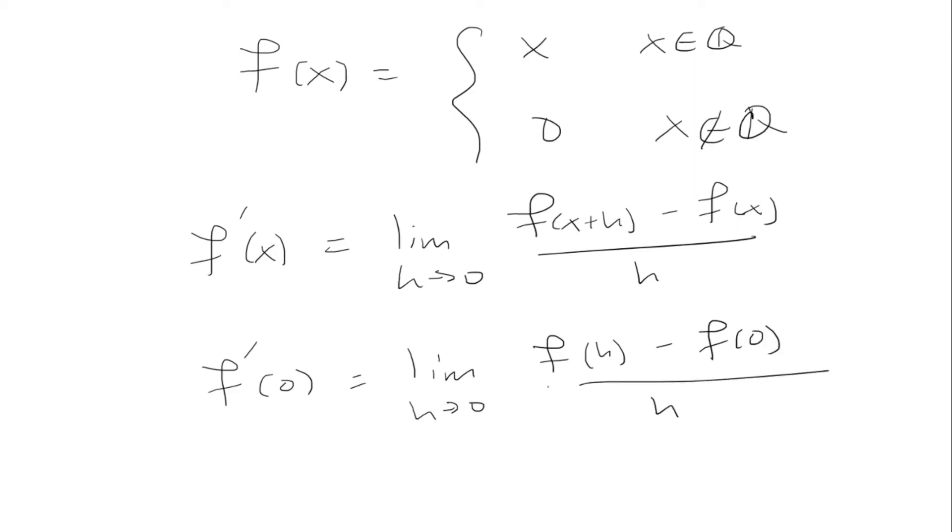And that comes down to this. Now, f of 0 is going to be 0 regardless if it's rational or not. Well, 0 is rational, so it's obviously going to be, in this case, it's 0.